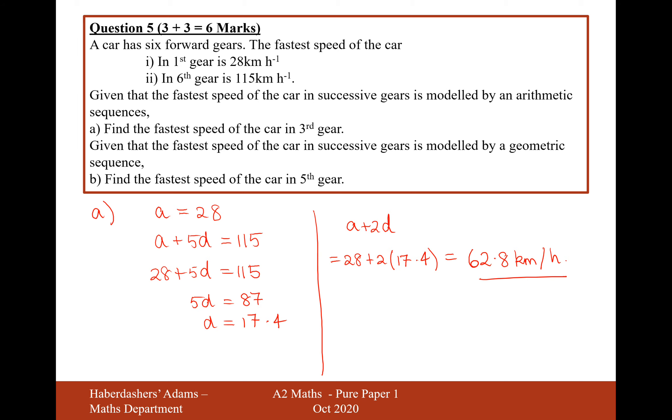So we are in arithmetic sequence for part A. Let's move on to part B. Given that the fastest speed of the car in successive gears is modeled by a geometric sequence, find the fastest speed of the car in the fifth gear.